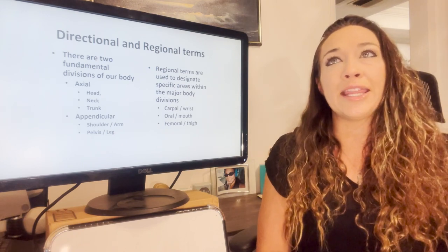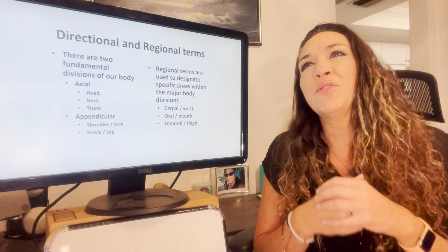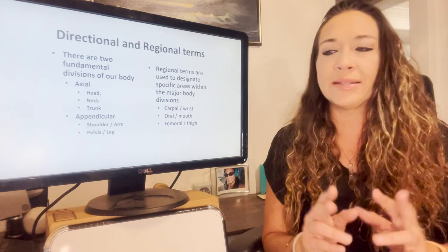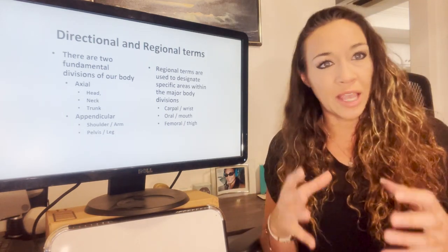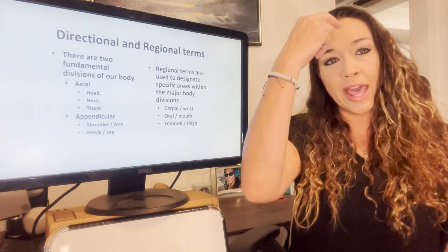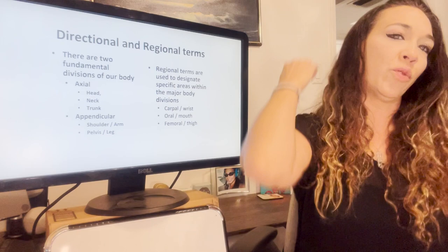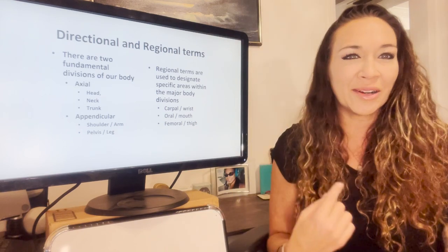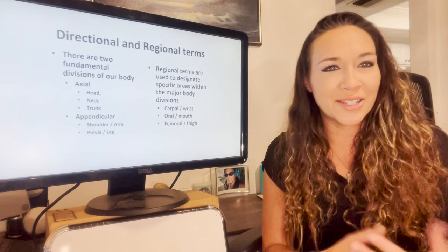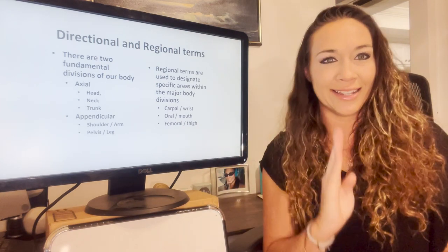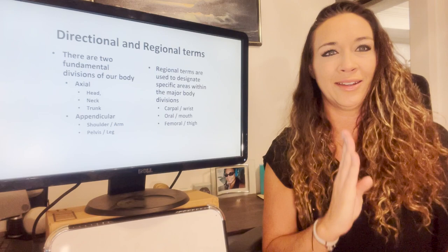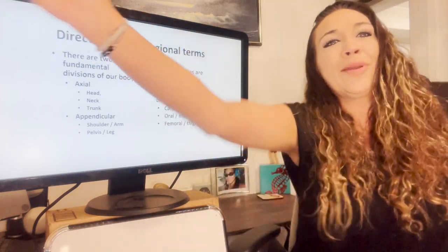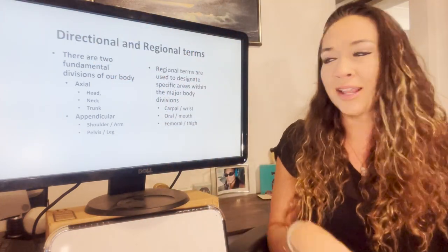We typically divide our bodies into two main sections. One is the axial system, which includes the head, neck, and trunk — basically your spinal cord region, the central axis. Think 'axis' — the center, your head and your spine. The appendicular is your appendages — everything coming off your body. There are also some very specific regions to talk about, like carpals for wrists, the oral or mouth, and the femoral or thigh region — that's where your femoral vein is located.